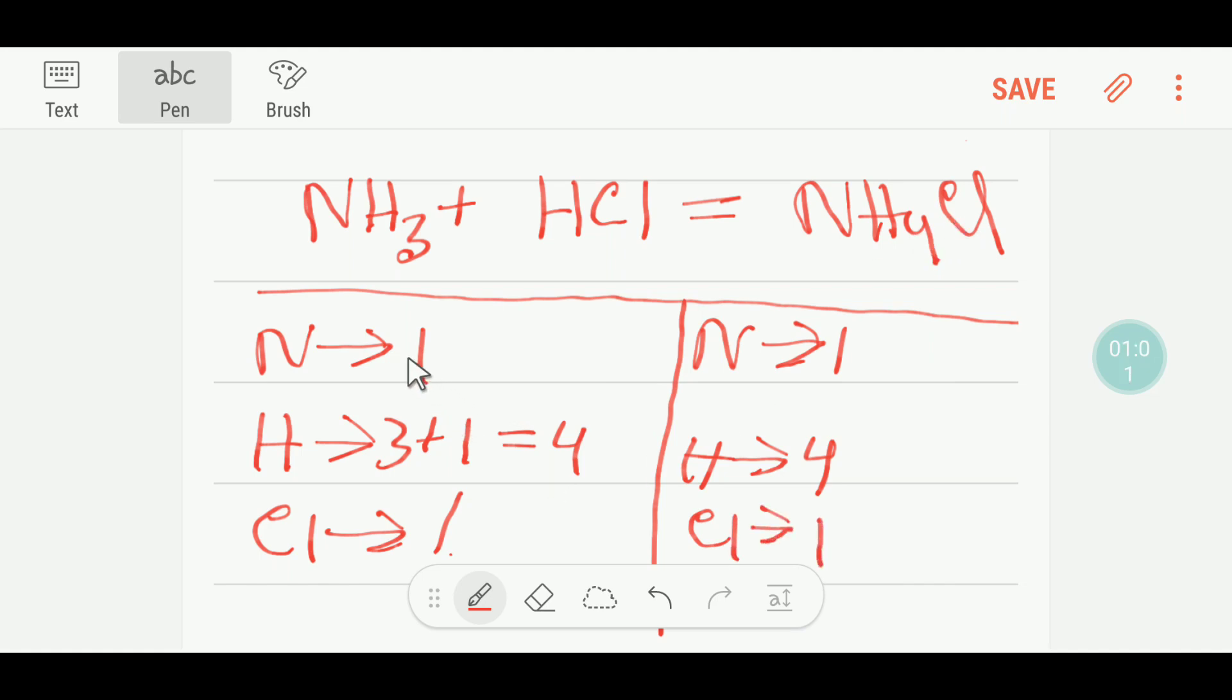So nitrogen is balanced. Hydrogen has four atoms here, hydrogen has four atoms, so hydrogen is balanced. Chlorine has one atom here, chlorine has one atom, so chlorine is also balanced. So this equation is already balanced.